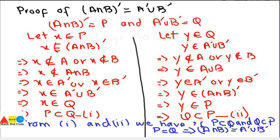We have proved both forms of De Morgan's Law, where intersection and union are related to each other by means of the complement. Thank you.